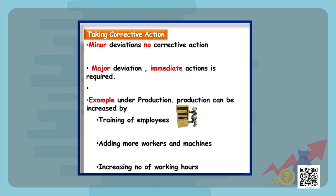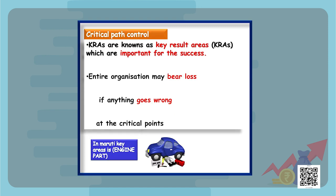Let's discuss critical path control. Key result areas are those areas which result in the success of the organization. For a car company, the main success factor is the engine of the car — if anything goes wrong in the engine, the whole company will suffer. So the company should not compromise on the engine component.